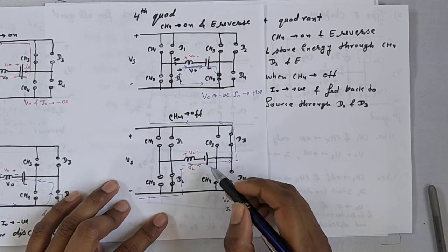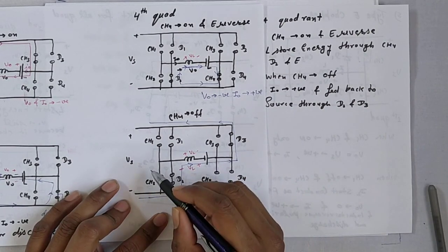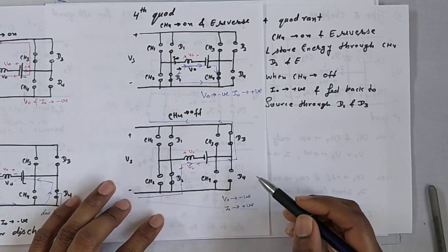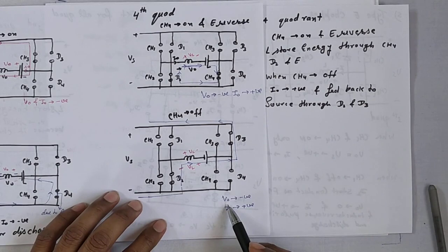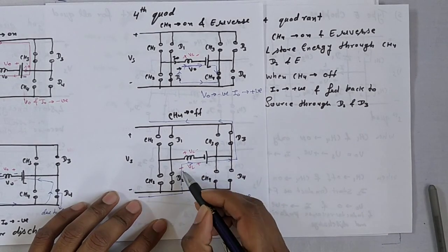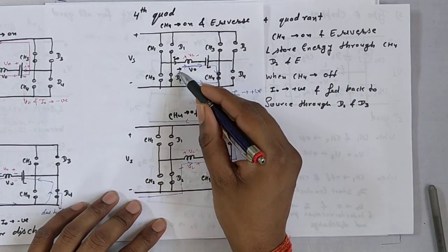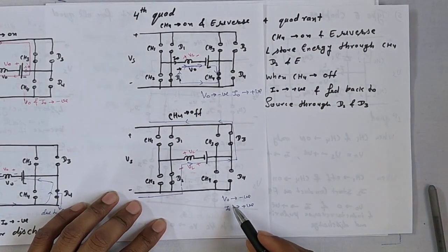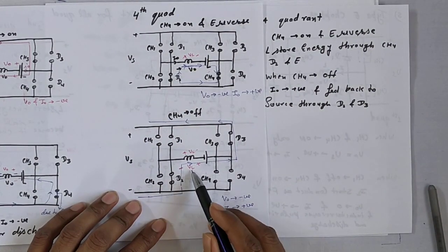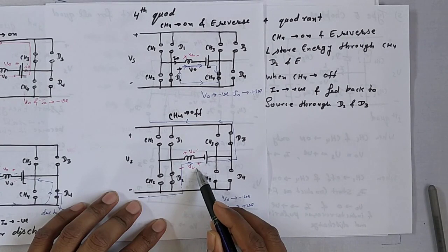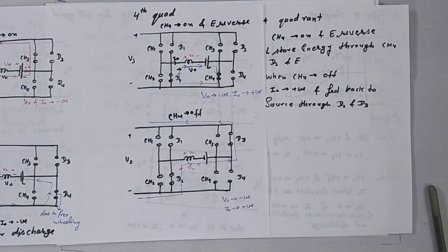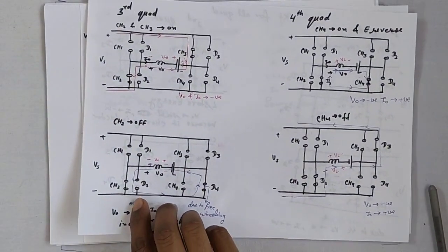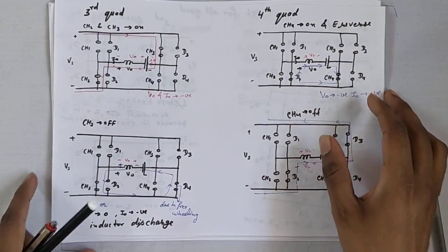In the fourth quadrant, power is delivered from the load to the source. V0 is negative and I0 is positive. This completes the explanation of the Type E four-quadrant chopper. Thank you very much.